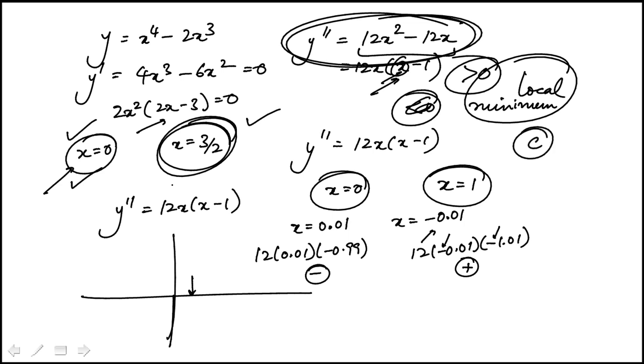You have two inflection points. So x equal to 0 and x equal to 1. And you can do the same thing around x equal to 1. So you can choose 1.01 and 0.99.